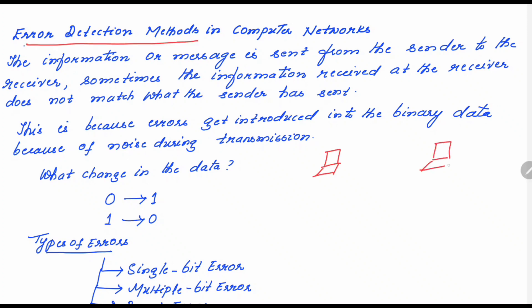The sender sends data to the receiver. Whatever data is sent from the sender side, we need to check whether the receiver is receiving exactly the same data. There are various error detection techniques to address this. Sometimes the information received at the receiver does not match what the sender sent, because errors are introduced into the data due to noise during transmission.